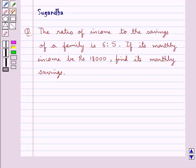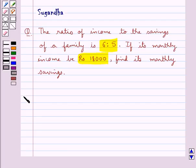Hello and welcome to the session. In this session we discuss the following question: the ratio of income to the savings of a family is 6 is to 5. If its monthly income be rupees 18,000, find its monthly savings. Let's proceed with the solution now.